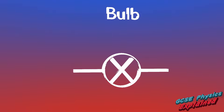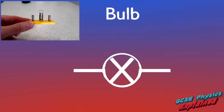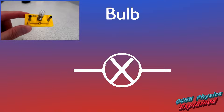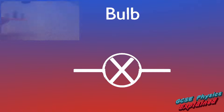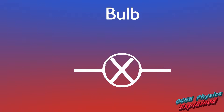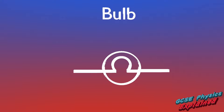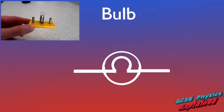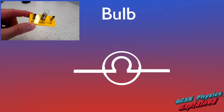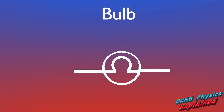Bulbs or lamps are designed to convert electrical energy into light energy. There are two symbols you might see: one is a circle with a cross in the middle, or this symbol which is a circle with an ohm sign in the middle — which is relevant because bulbs have a high resistance and heat up so much that they glow and give off light.